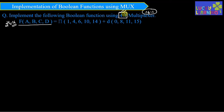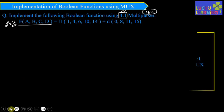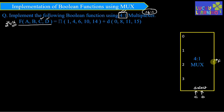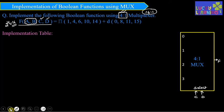For the implementation of this function using a 4-to-1 multiplexer, we use an implementation table. A 4-to-1 multiplexer has four data inputs and one output. For function F(A,B,C,D), the two least significant variables C and D are connected as the select inputs to the multiplexer. These two select inputs select one of the four data inputs to be connected to the output, and the data input values are determined based on the higher-order variables A and B.